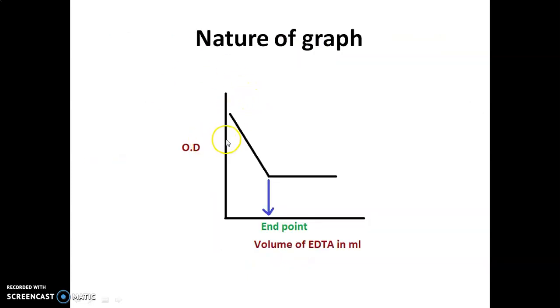This is the graph: optical density (absorbance) versus volume of EDTA added in ml. First, the absorbance is high without addition of EDTA. This first value indicates the iron salicylic acid complex.